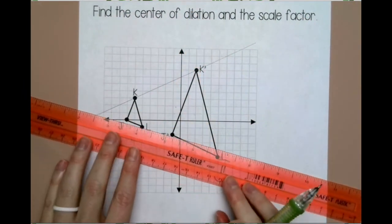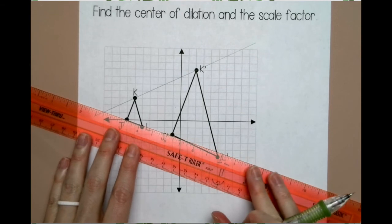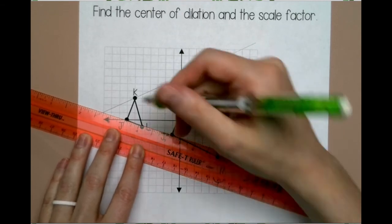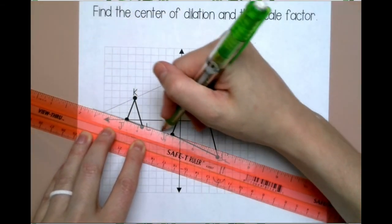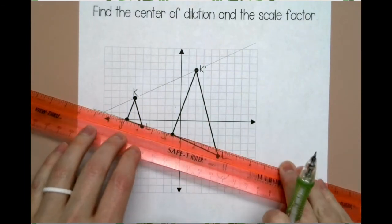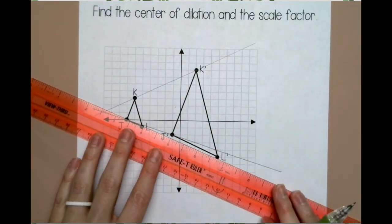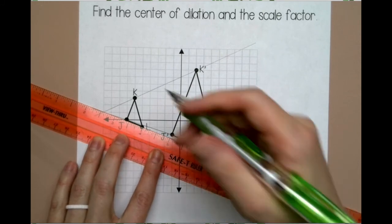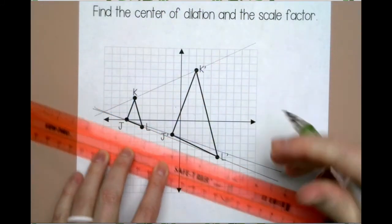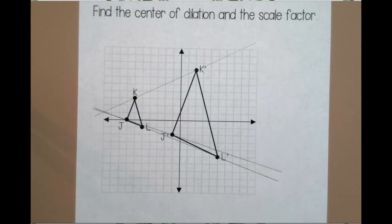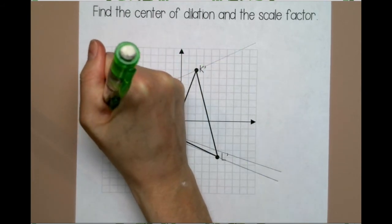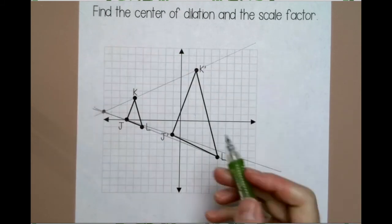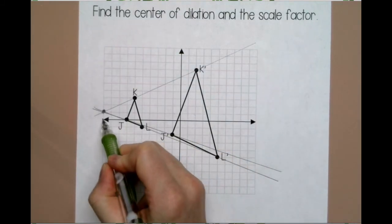And then I'm going to do the same thing with J. And you really only have to do two lines, but if you want to do the third, you can. This one's not going to be much different because J and L are pretty close together. And where the lines meet is your center of dilation. So my lines meet here, that's my center of dilation, which would be (-10, 1).